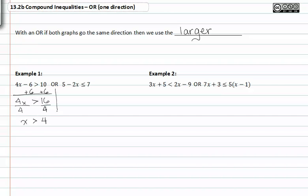We also solve the inequality on the right. Subtract five from both sides to get -2x ≤ 2. Divide both sides by -2, flipping our inequality, we get x ≥ -1.